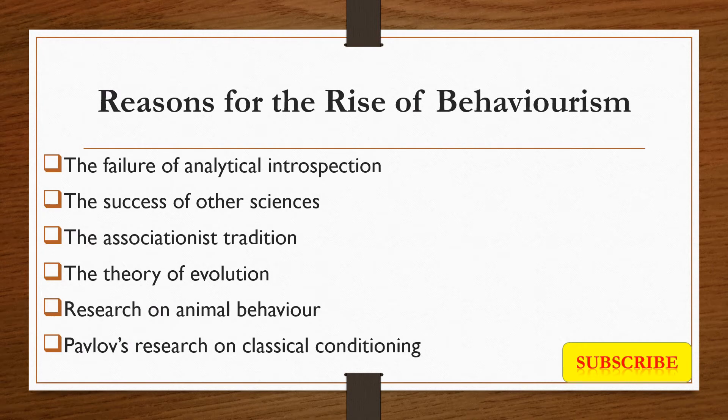There are several reasons that led to the rise of behaviorism. These include the failure of analytical introspection, the success of other sciences, the associationist tradition, the theory of evolution, the research on animal behavior, and Ivan Pavlov's research on classical conditioning. In the following slides, I'm going to illustrate each of these reasons in depth.